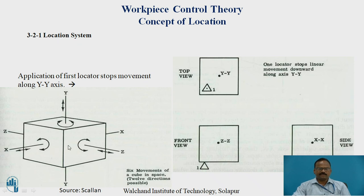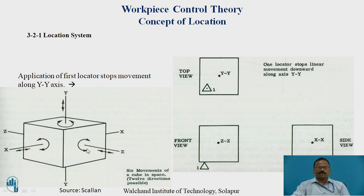Similarly, along each axis there will be moments of rotation, divided into clockwise and anticlockwise. Along the X-axis: one clockwise, one anticlockwise. Along the Y-axis: one clockwise, one anticlockwise. Along the Z-axis: one clockwise and one anticlockwise. So there are six moments of rotation. In total there are six moments of translation and six moments of rotation — this is called 12 degrees of freedom.